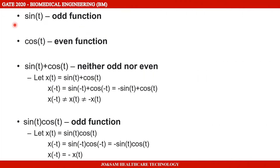In the question, the first option P is sin t — this is an odd function. The second option Q is cos t — this is an even function. The third option R is sin t plus cos t, which is neither odd nor even.